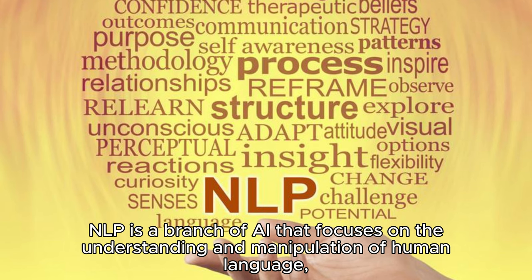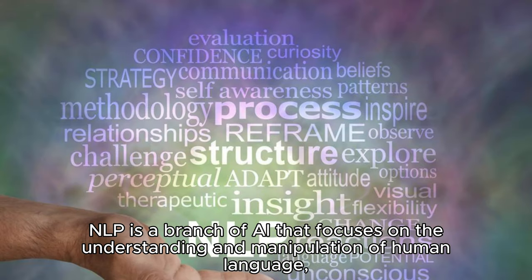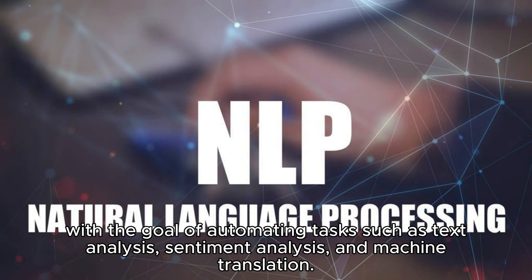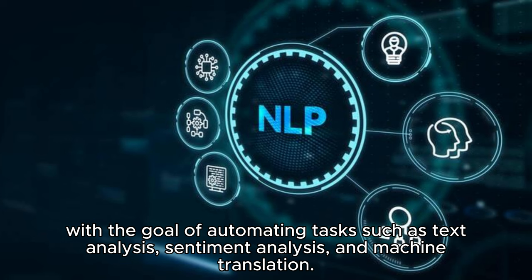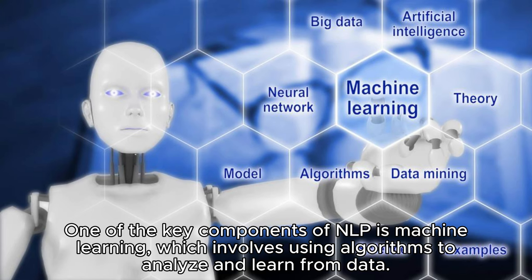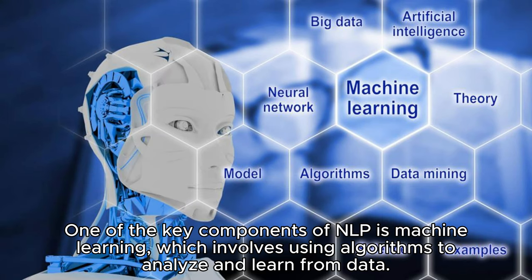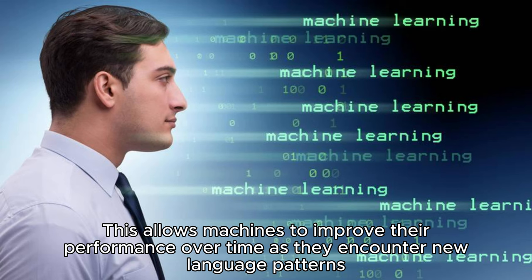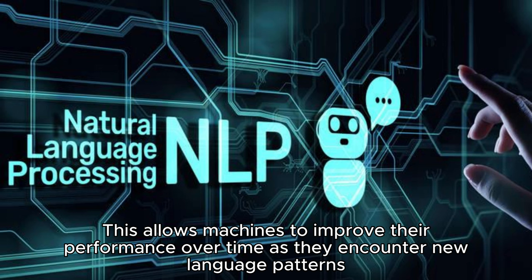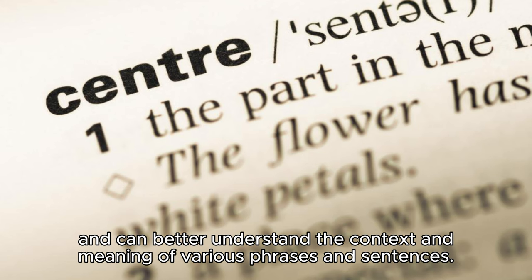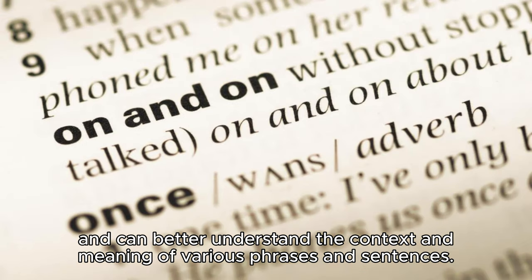NLP is a branch of AI that focuses on the understanding and manipulation of human language, with the goal of automating tasks such as text analysis, sentiment analysis, and machine translation. One of the key components of NLP is machine learning, which involves using algorithms to analyze and learn from data. This allows machines to improve their performance over time as they encounter new language patterns and can better understand the context and meaning of various phrases and sentences.